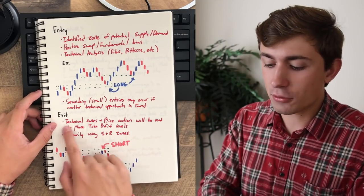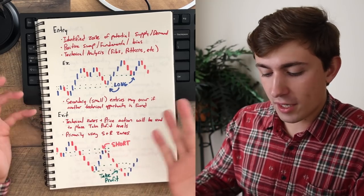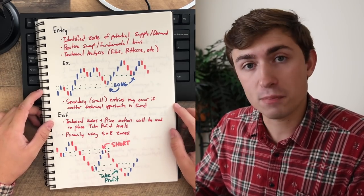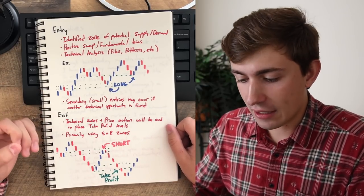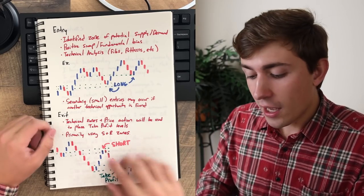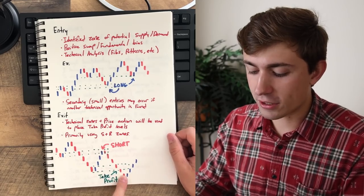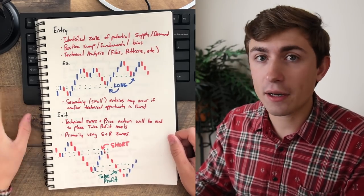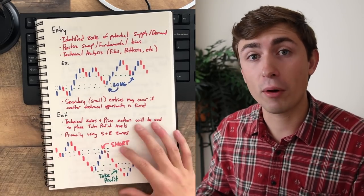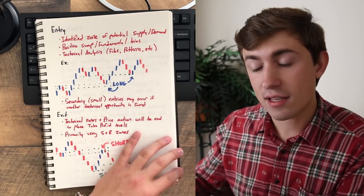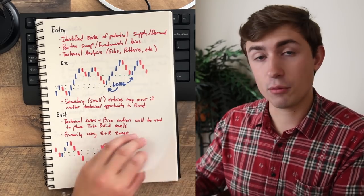Let's go ahead and talk about the exit technical zones and price action will be used to place take profit levels. So what I'm going to use on the exit is technical zones and price action. For the most part, I'm going to be looking to get out of a trade at a technical zone of supply or demand that I kind of come to find in my technical analysis and primarily going to be using support and resistance in this factor. You can see, for example, if I was short here, I'd look to take profit at a recent structure. Very simple, very kind of basic trading doesn't have to be super complicated.